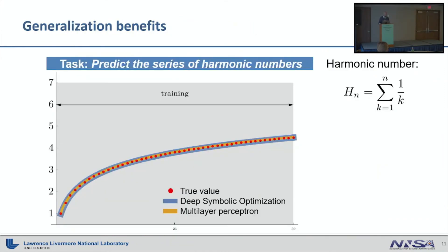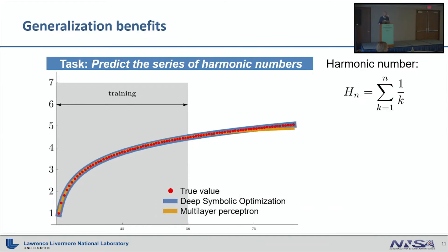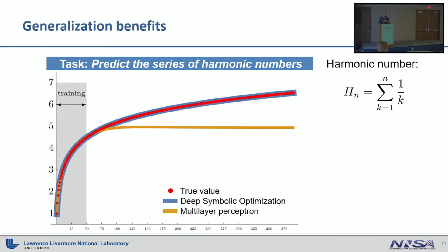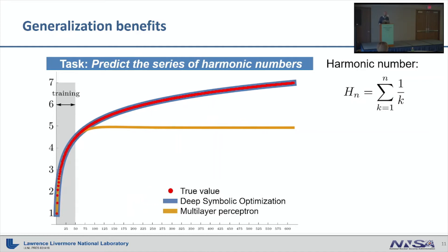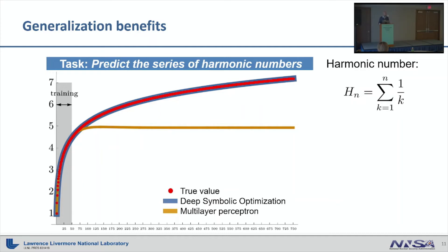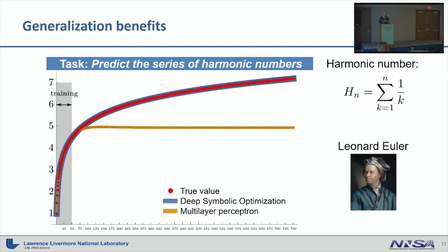The symbolic approach also has generalization benefits. For the prediction of a series of harmonic numbers, you can see that a simple neural network in orange fits our training data (the red dots), as does an expression found by our optimization framework in blue. However, when we sample data from outside the training range, the error for the neural network increases the further we go, while the found expression continues to fit well. In fact, our framework discovered in minutes what Leonard Euler discovered in the 18th century, and was even able to recover Euler's constant gamma with very high accuracy.